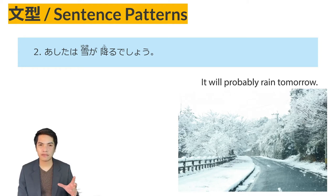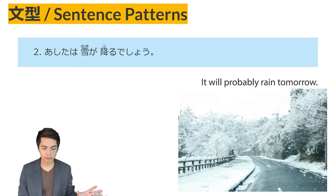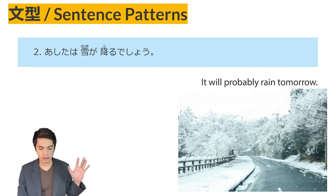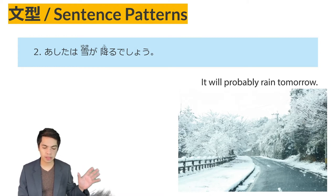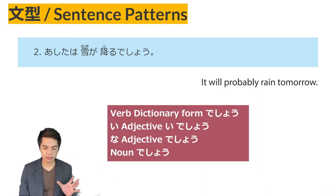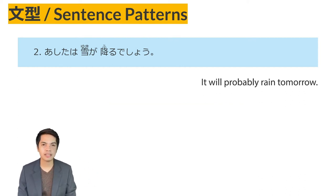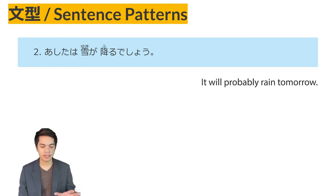Sentence pattern number two is normally used in weather forecasts. For example: ashita wa yuki ga furu desu — from the verb yuki ga furimasu, meaning 'to snow.' So 'the snow will probably fall tomorrow' is a forecast. The verb dictionary form plus desu is used here with a falling intonation. This is different from the rising intonation desu used in confirmations like iku desu, meaning 'you're going, right?'